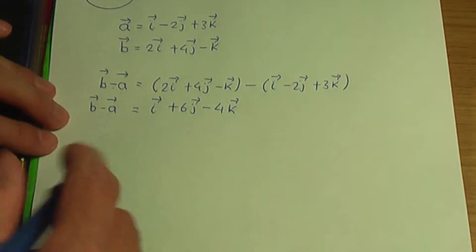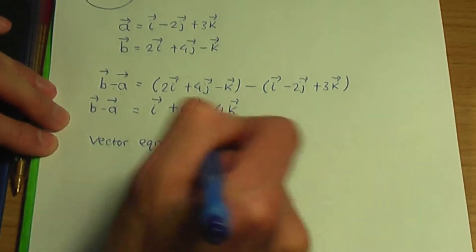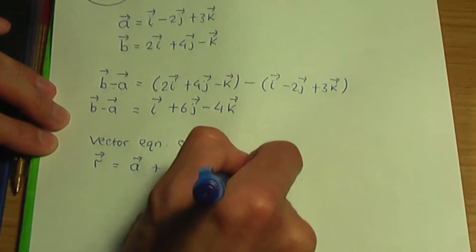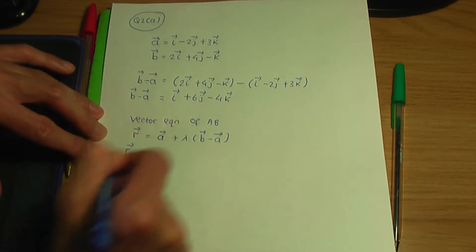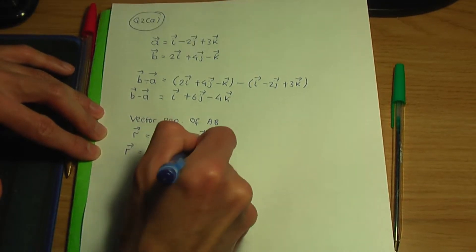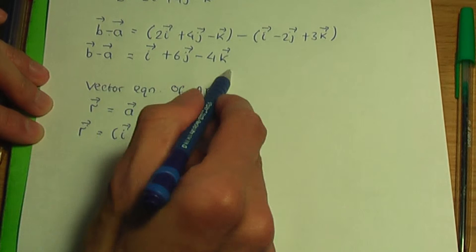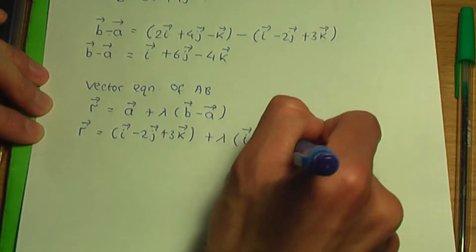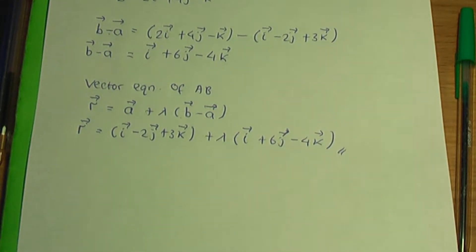So we have the vector b minus a. To work out the vector equation of the line AB, remember the result: r equals a plus lambda times (b minus a). Replacing the data, vector r equals the vector a which is i minus 2j plus 3k, plus lambda times the vector b minus a which we worked out: i plus 6j minus 4k. So this should be the solution to part a.